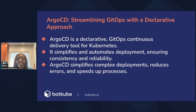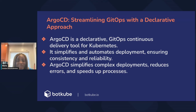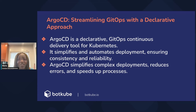This is where Argo CD comes in. Argo CD is a declarative GitOps continuous delivery tool that allows DevOps professionals to simplify and automate their deployment processes. It has a great UI that lets you visualize the health of your apps, helps reduce errors, and simplifies different deployments.